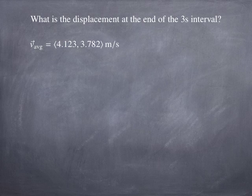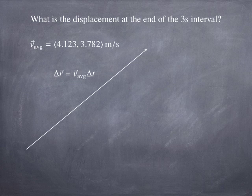Well, let's say we want to know the displacement at the end of the 3 second interval. Well, that's easy. The displacement and the average velocity are related by this simple relationship. Remember, the definition of average velocity is the displacement divided by the change in time. So that means the displacement has to be the average velocity times the change in time.